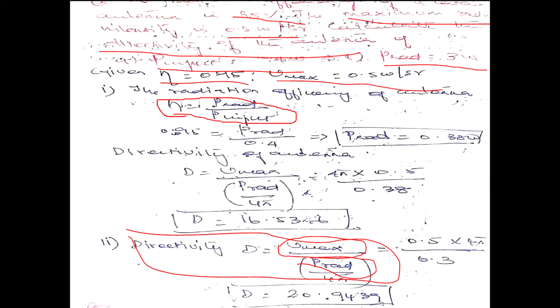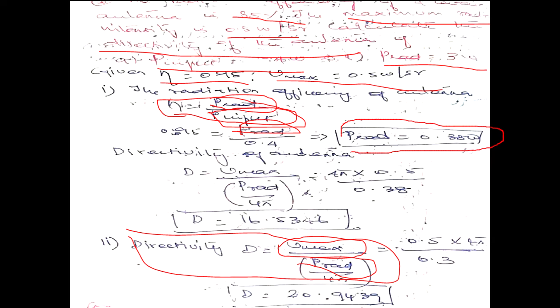You can calculate the radiation power because the efficiency formula is output power (or radiation power) divided by incident power (or input power). From that, you can calculate P_radiation, which equals 0.38 watt. By substituting that calculated P_radiation of 0.38 into the directivity formula, you can calculate the directivity for the first case with P_input equal to 0.4 watt.